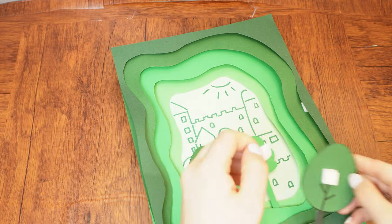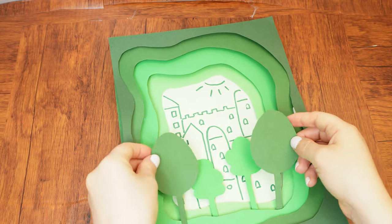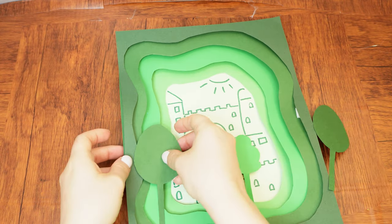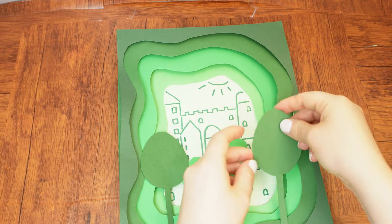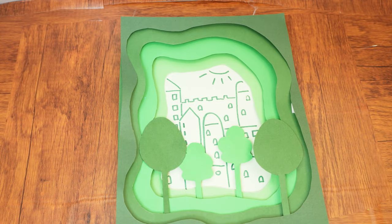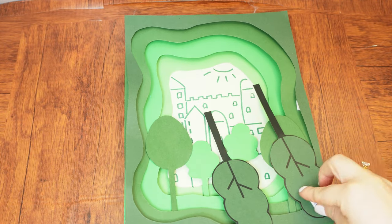Then lay down the medium-sized trees so that they frame the smaller trees. Lastly, attach the largest trees at the outermost edges. Tuck the trunks of all four trees between the third and fourth cutouts.